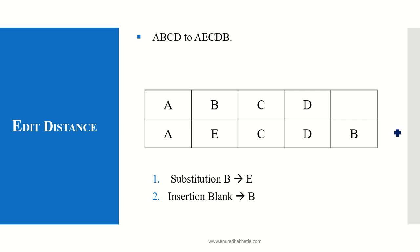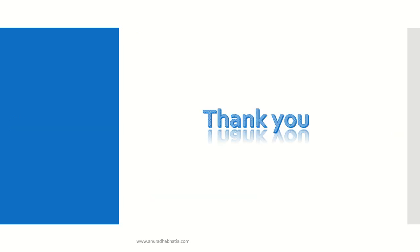So we need 2 operations — substitution of B to E and inserting B — to convert the string ABCD to AECDB. This edit distance is used in big data analytics to convert one string to another string and to calculate their distance. Thank you.